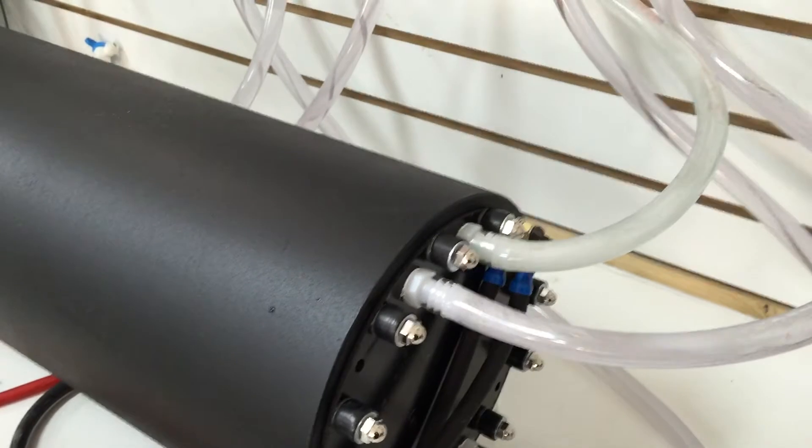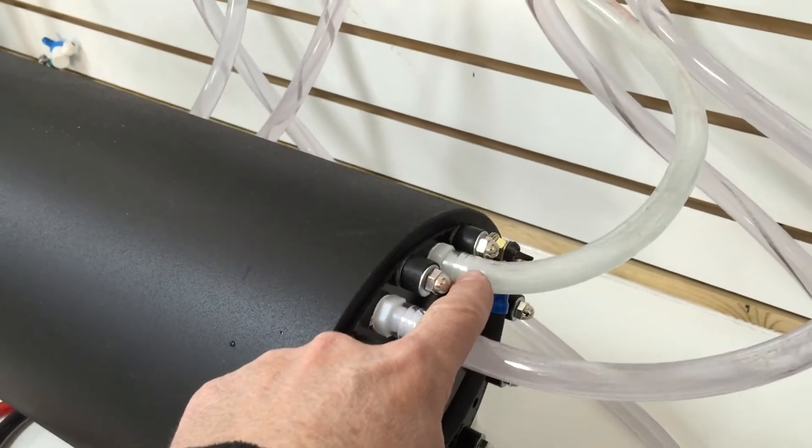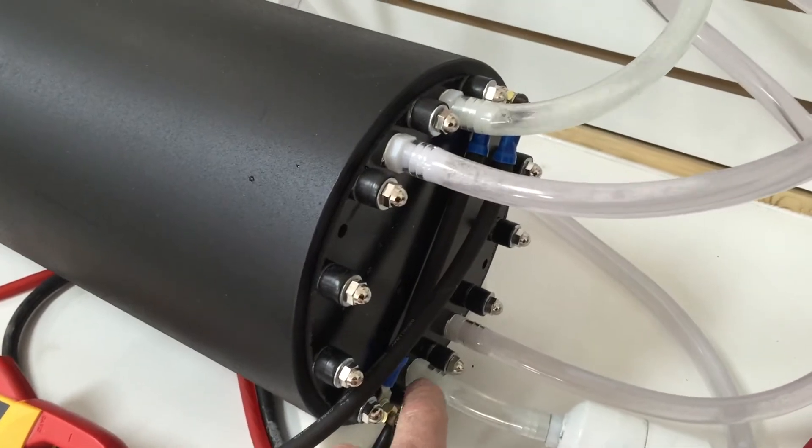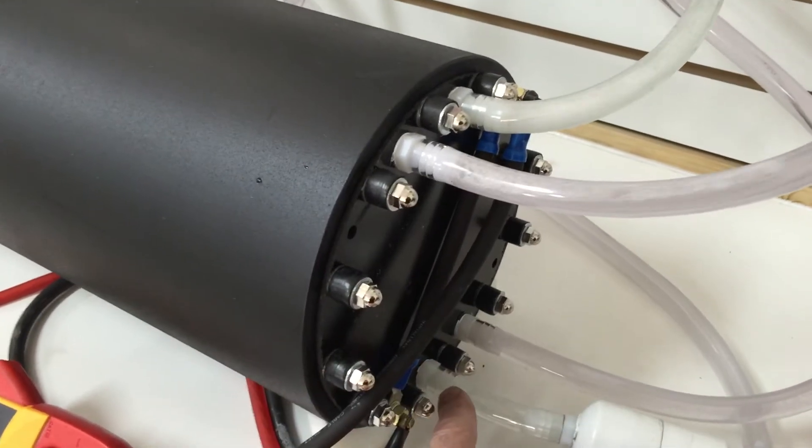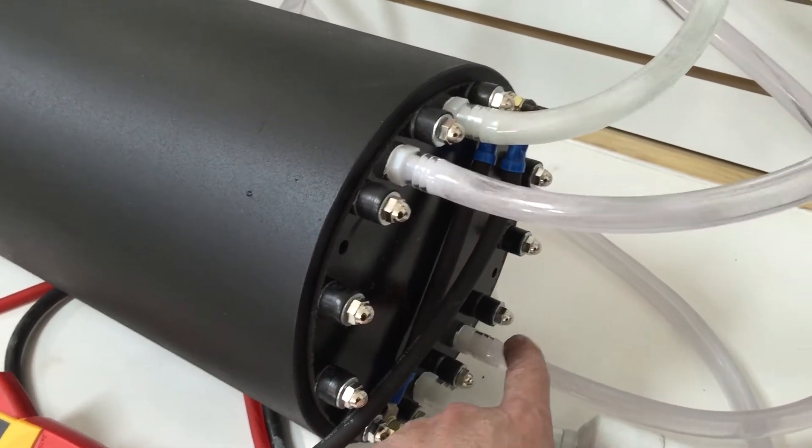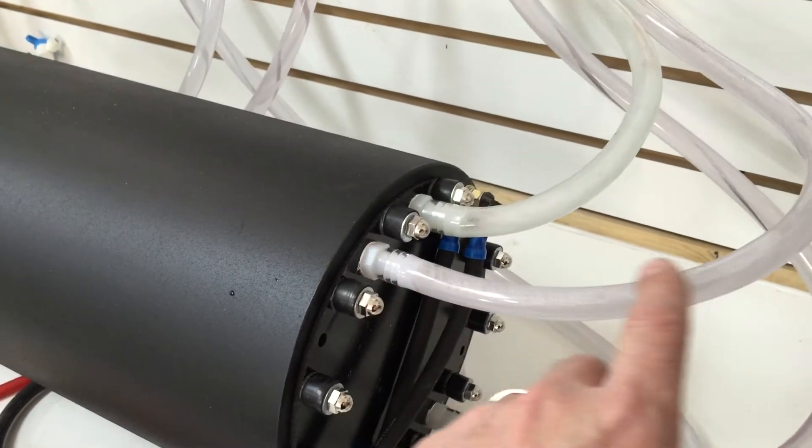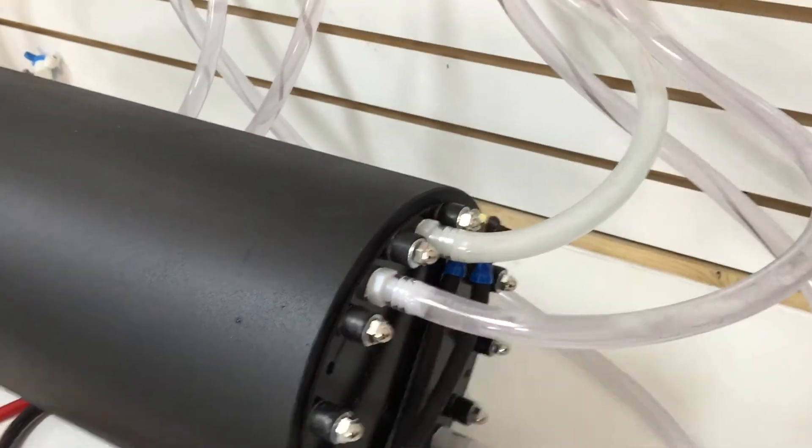Here you can see the hydrogen output and the oxygen output. Down here we've got the hydrogen input and oxygen input. That's where the electrolyte goes back into the cell. This is where the electrolyte and gases will flow out.